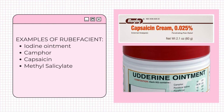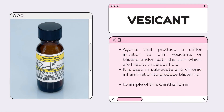Rubifacients are associated with terms like iodine ointment, ichthyol ointment, liniments, tightener, brace, or sweat. The second classification is vesicant. Vesicants are agents that produce stronger irritation to form vesicles or blisters underneath the skin which are filled with serous fluid. It is used in subacute and chronic inflammation to produce blistering. An example of a vesicant is cantharidine.